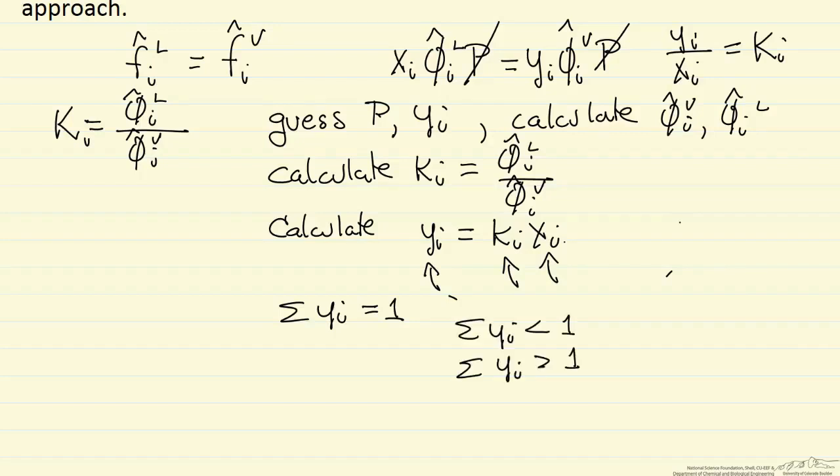Most likely, the sum is either less than 1 or greater than 1. So let's say the sum is less than 1. That means we want to make a new guess of a lower value for the pressure. If it was greater than 1, we'd want to make a new guess of a higher value for the pressure.